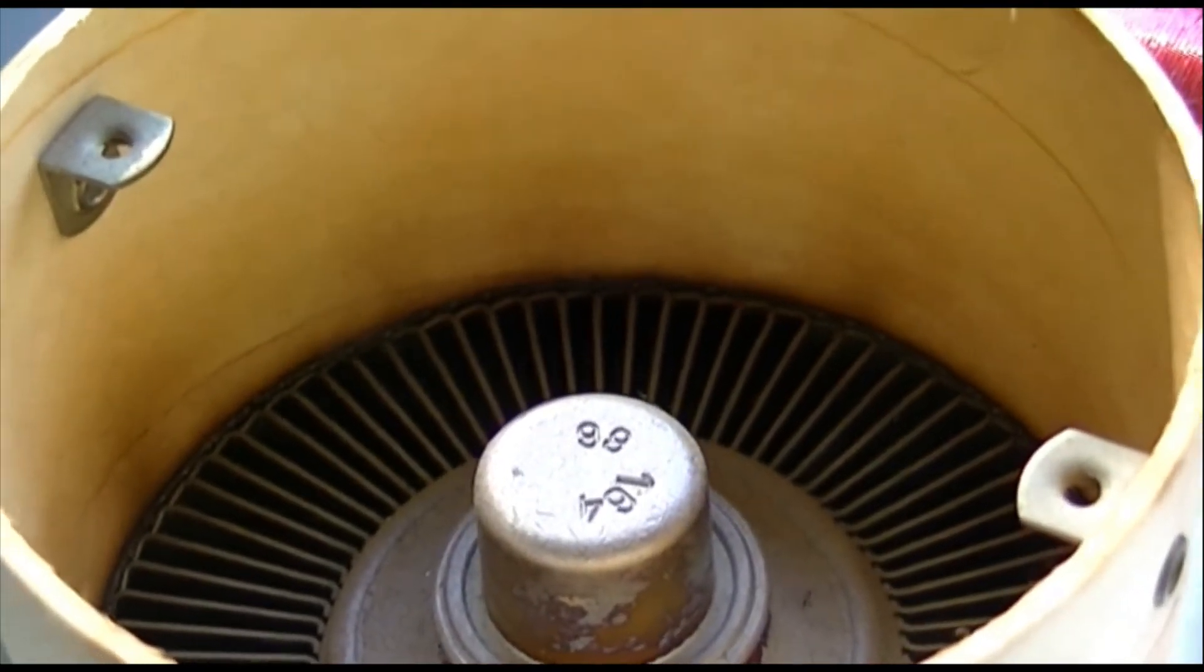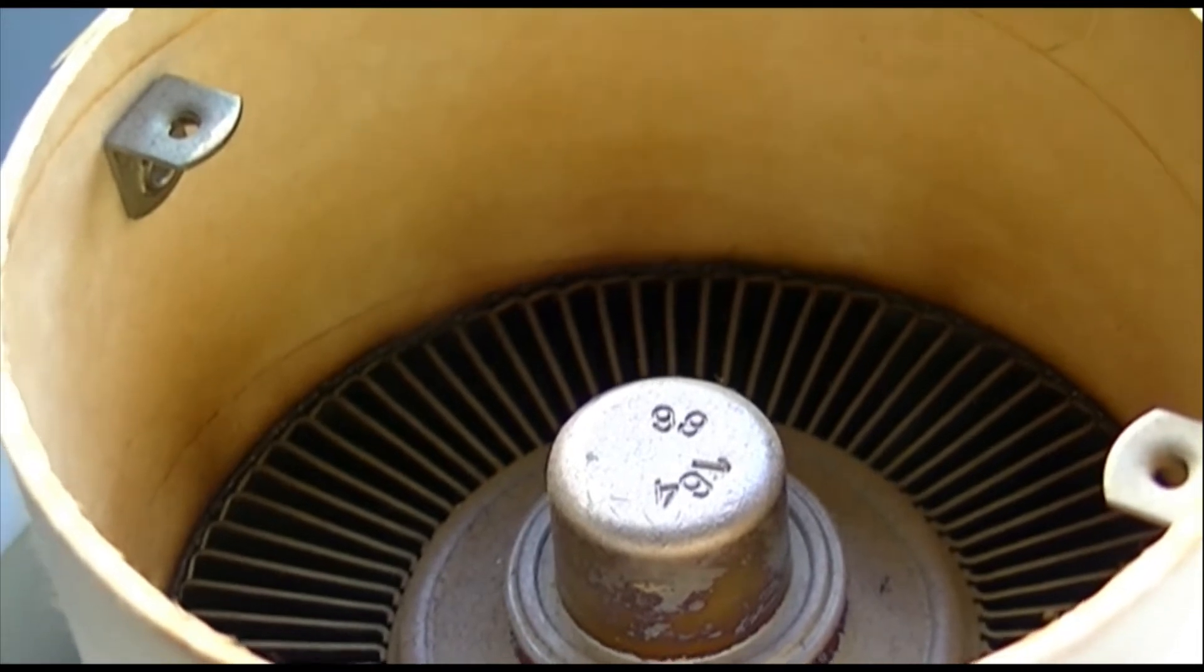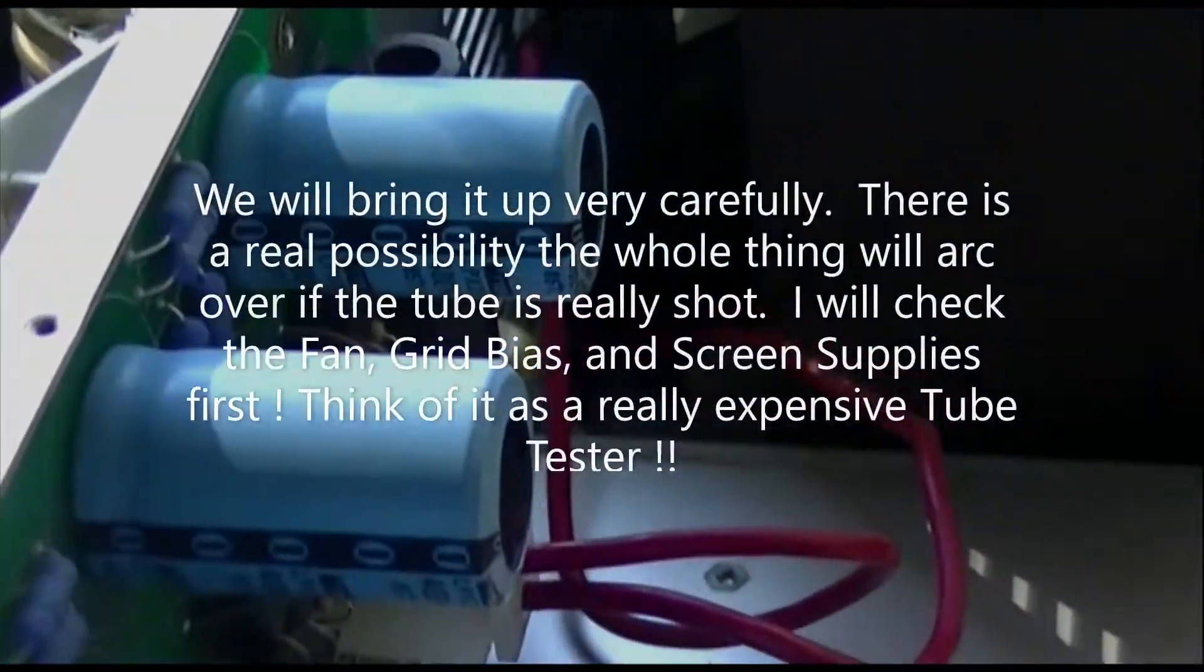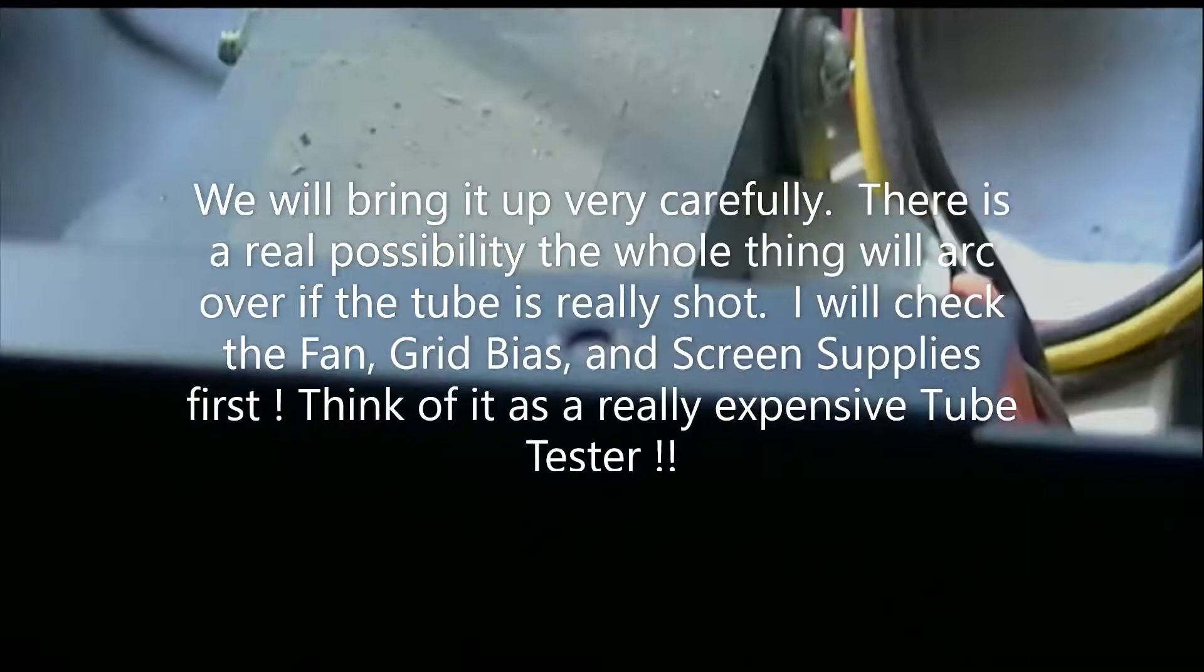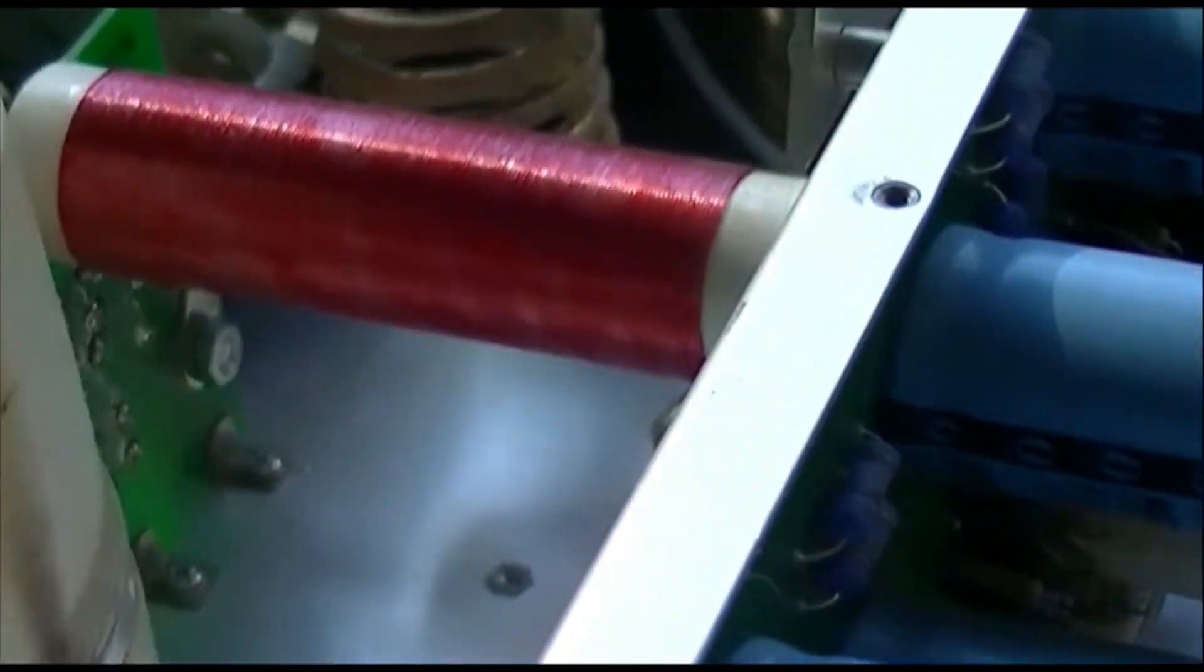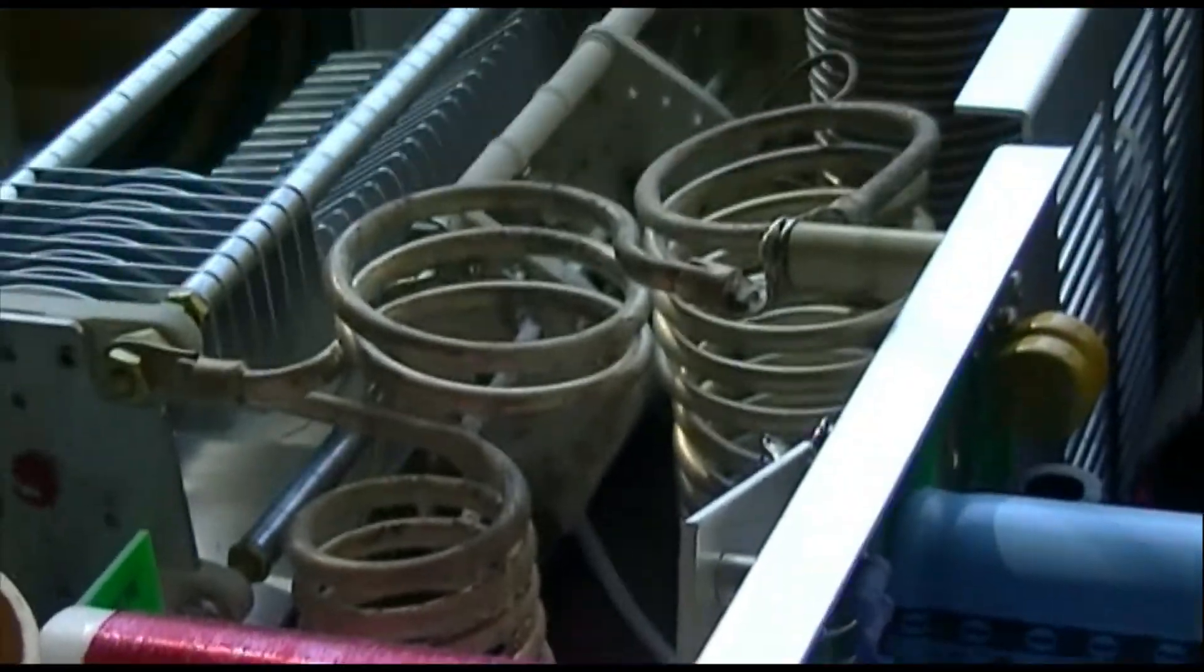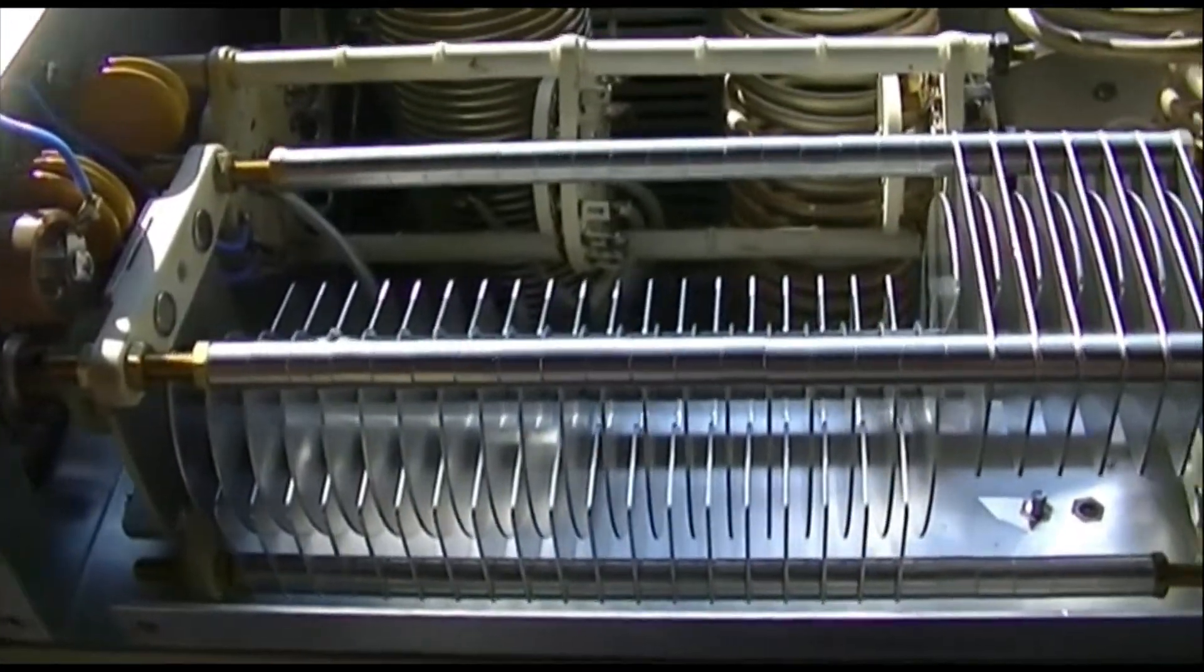But if the grid current is high into a resonant dummy load or a resonant load or a dummy load, then we know the tube has had a hard life. Anyway, I'm gonna just get in here and hit the thing with the damp rag, get the dust off it, and take the bottom cover off and see what we can discover in there.